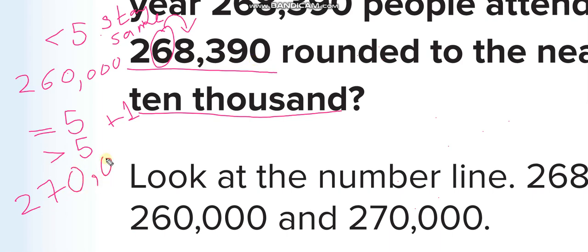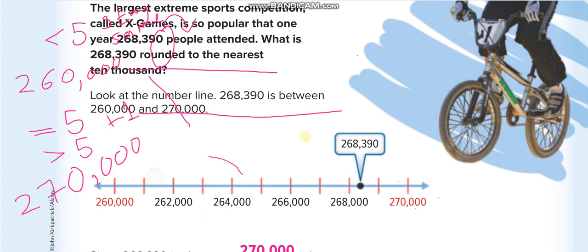Let me repeat: they give us 268,390 and want us to round to the ten-thousands place. We circle the 6. We check the next digit — if it's less than 5, the 6 stays the same and we get 260,000. But since the next digit is 8, which is more than 5, we add one: 6 becomes 7, giving us 270,000.